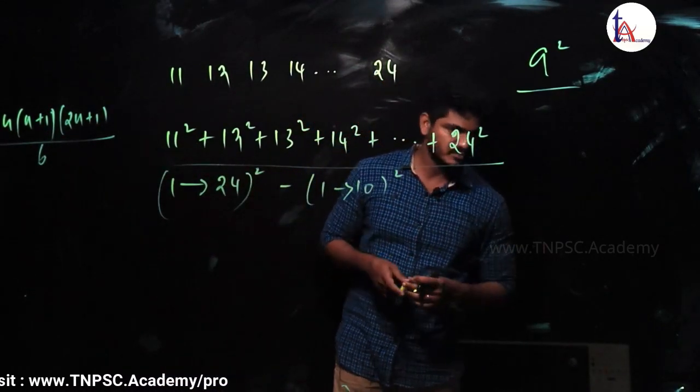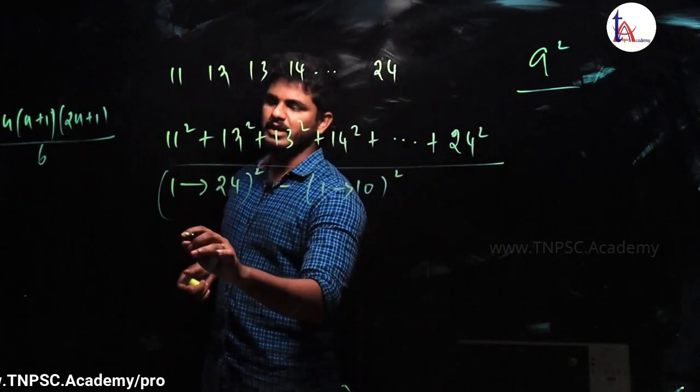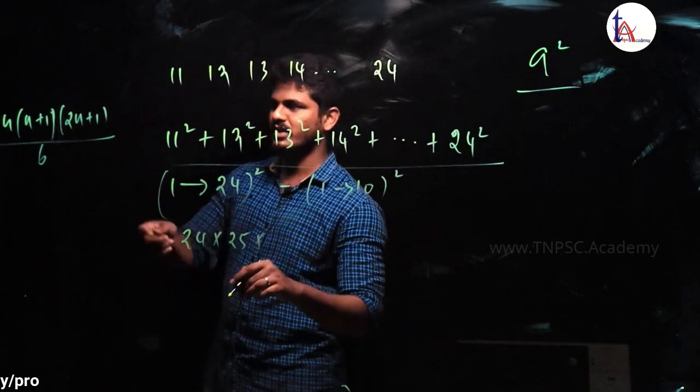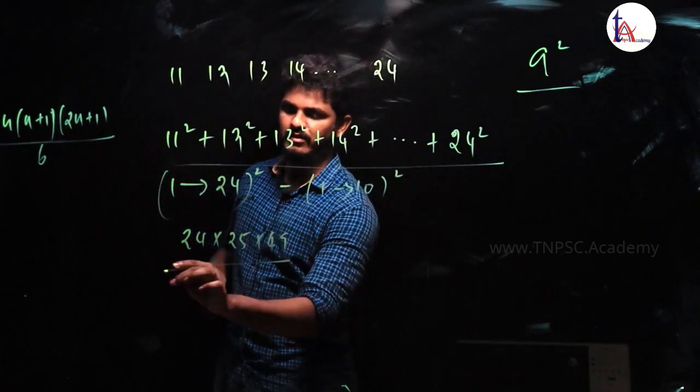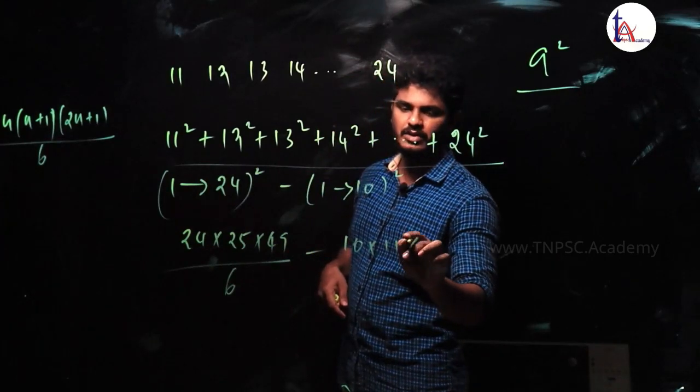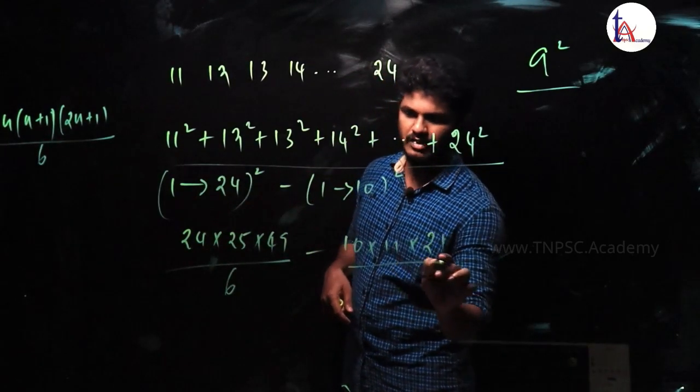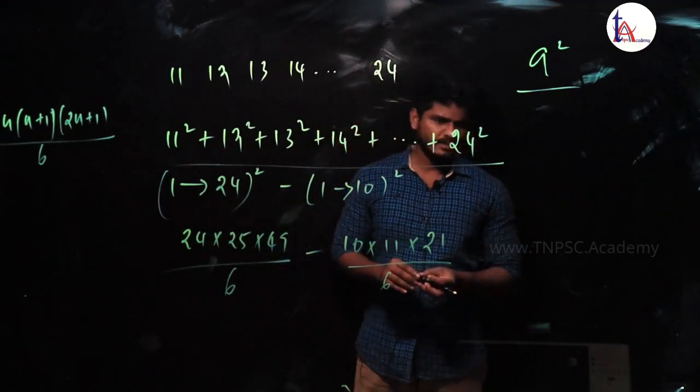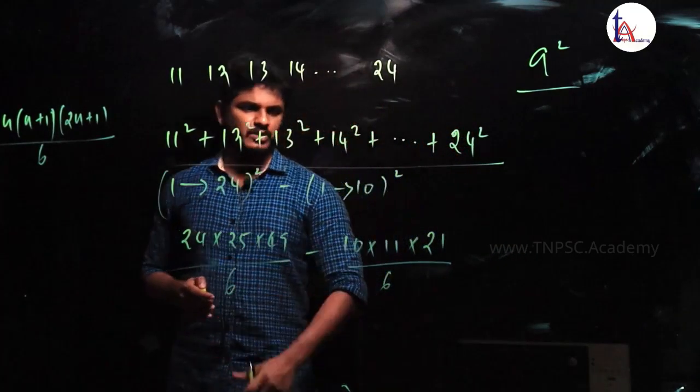So what do we do? This is the same formula, so 24 into 25 into 49 divided by 6 minus 10 into 11 into 21 divided by 6. Are you ready? Okay, so what do we do?